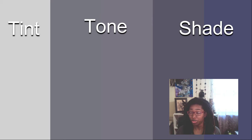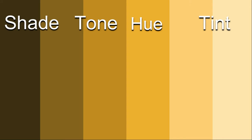Now that we understand this, let's go ahead and see what it looks like with color versus grayscale. Here's a color palette I made for today's video using a palette generator, which I'll also discuss later. Here we can see our hue, which is this medium yellow, and then we can see where white has been added, where gray has been added, and where black has been added, to create the different colors in the gradient.